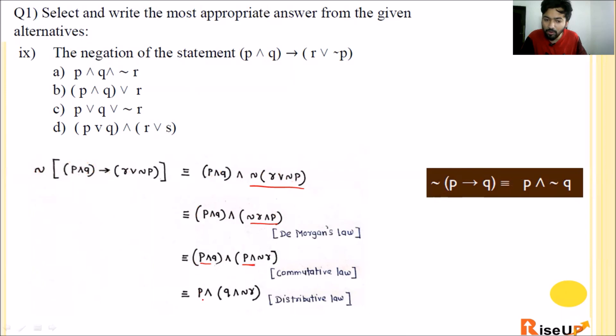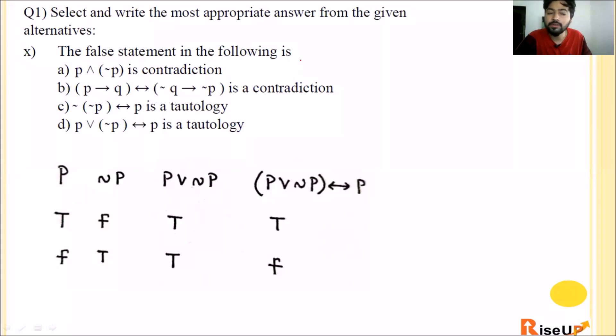Ninth one: The negation of the statement P and Q implication R or negation P. The negation of P implication Q is P and negation Q. So first part as it is and second part negation. Now apply De Morgan's law: P and Q as it is, and negation of R or becomes and, negation P becomes P. Now change the order using commutative law: P and Q and negation R and P. P and negation P is a contradiction, and the key rule is both must be true to be true, so it's false. So the answer is false.